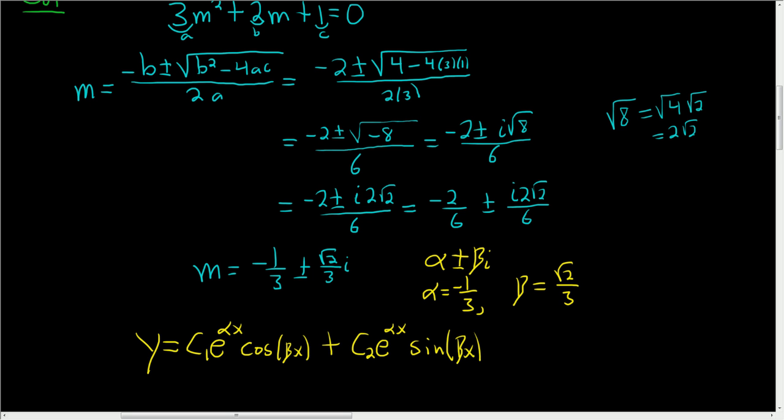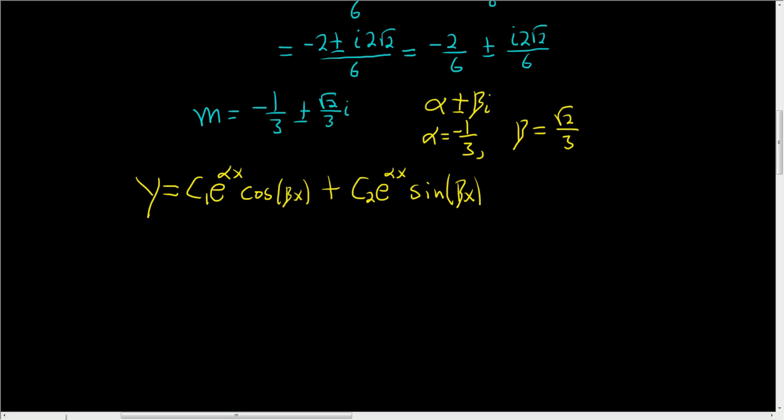And all we do now is plug in alpha and beta. So y equals c1 e to the, and we said alpha was negative 1 third, I'm going to write that as negative x over 3. Same thing. And then cosine,